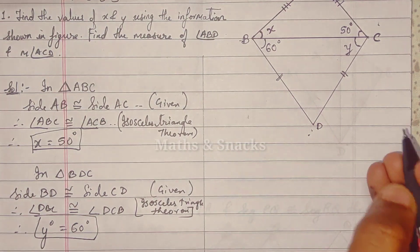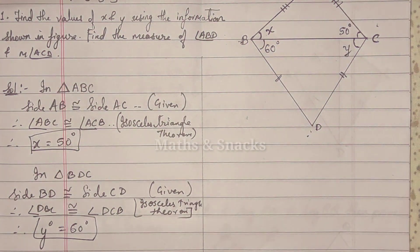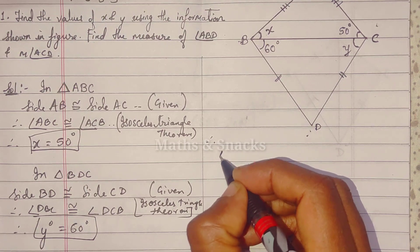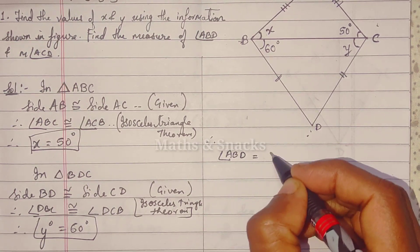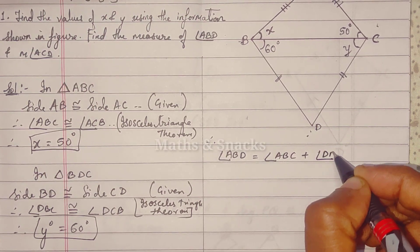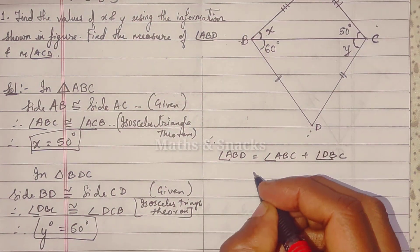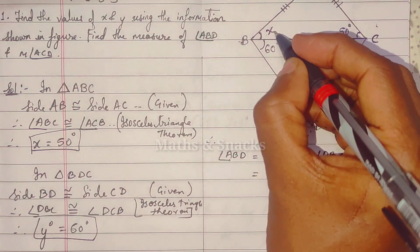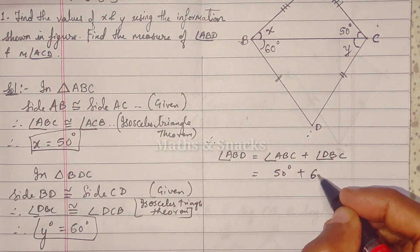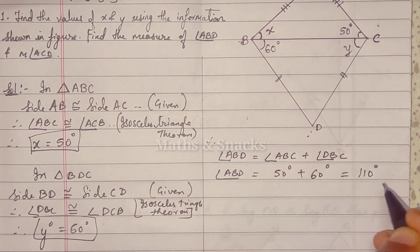Now, what have they asked? They want the measure of whole angle B and whole angle C. So therefore, angle ABD is equals to angle ABC plus angle DBC. Correct? This small angle plus this gives whole angle B. So x we got 50 degrees and this we got 60 degrees. So that equals 110 degrees, angle ABD.